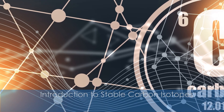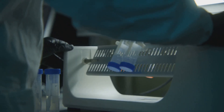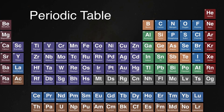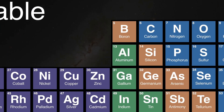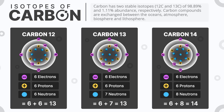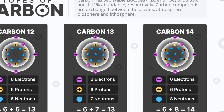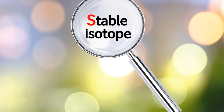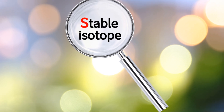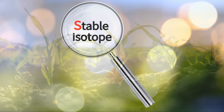Welcome to our video on Stable Carbon Isotopes. Carbon, an essential element in all known life forms, exists in several isotopic forms. The most common stable isotopes of carbon are carbon-12 and carbon-13. Unlike radioactive isotopes, these stable isotopes do not decay over time, making them invaluable in various scientific fields.